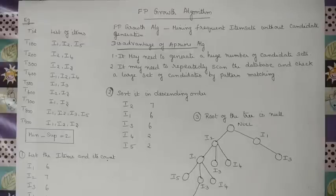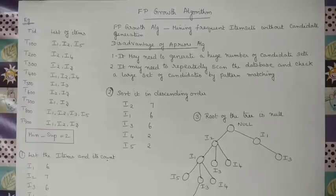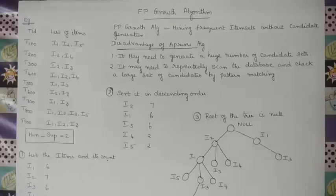We are going to see about the FP growth algorithm. We have seen about the Apriori algorithm in the previous video. The Apriori algorithm has its own advantages as well as disadvantages. When we look at the disadvantages, it has to generate a large number of candidate sets, and it repeatedly scans the database and checks large sets of candidates by pattern matching. Because of that, it takes a large amount of memory and time, reducing its efficiency.